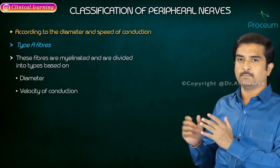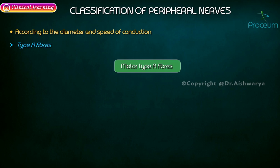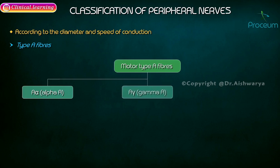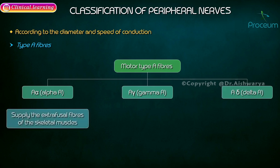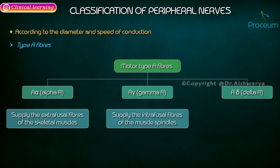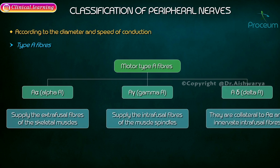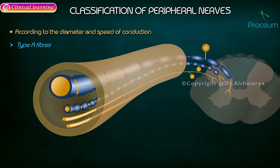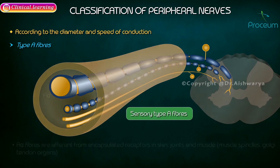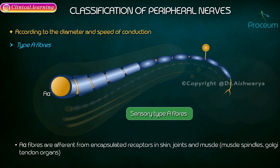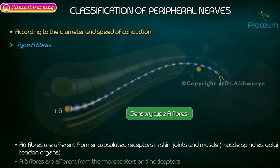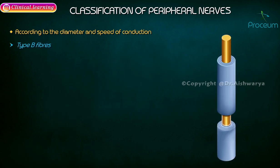The motor Type A fibers include A-alpha, A-gamma, and A-delta fibers. A-alpha fibers supply the extrafusal fibers of skeletal muscles, A-gamma fibers supply the intrafusal fibers of the muscle spindles, and A-delta fibers are collaterals to A-alpha fibers and also innervate intrafusal fibers. For sensory Type A fibers, A-alpha sensory fibers carry impulses from encapsulated receptors in the skin, joints, muscles, muscle spindles, and Golgi tendon organs, while A-delta fibers arise from thermoreceptors and nociceptors.